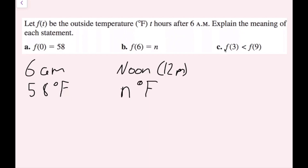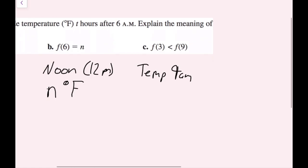For part c, we have f of 3 is less than f of 9. So what that means is the temperature 3 hours after 6 a.m., so at 9 a.m., is going to be less than the temperature 9 hours after 6 a.m., which is going to be 3 p.m. So that's what the meaning of a, b, and c of these function notations mean. Now we're done.